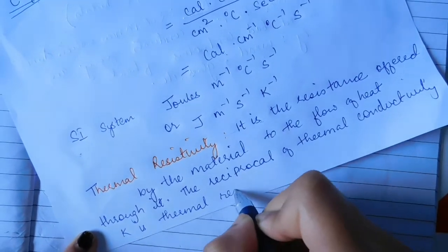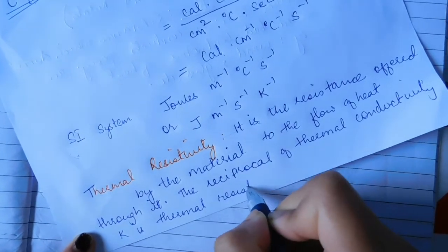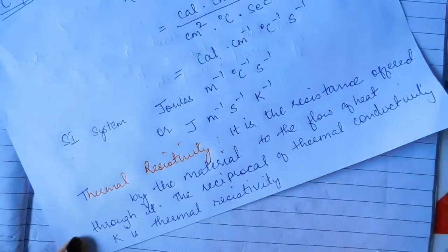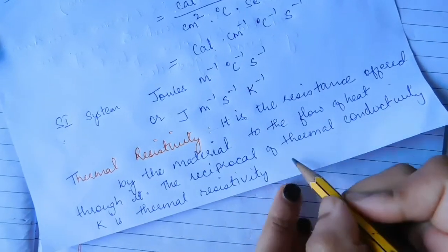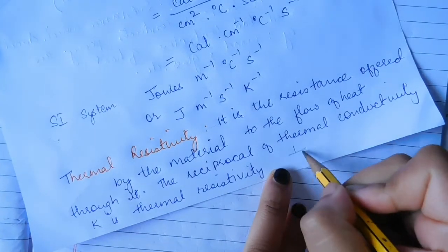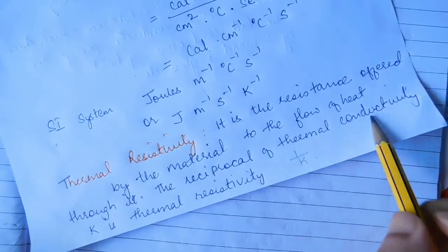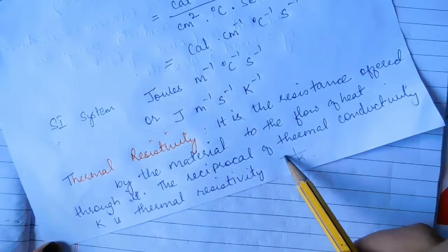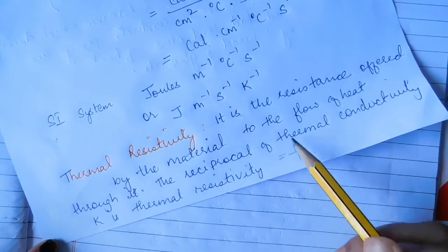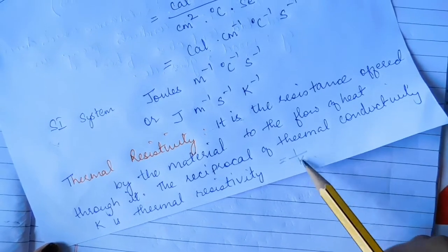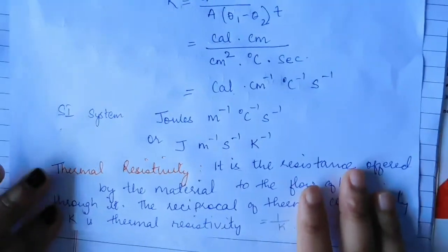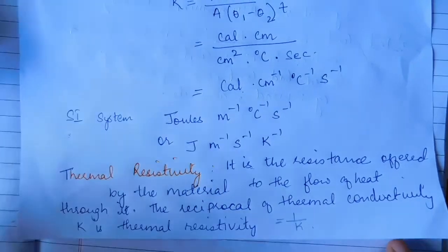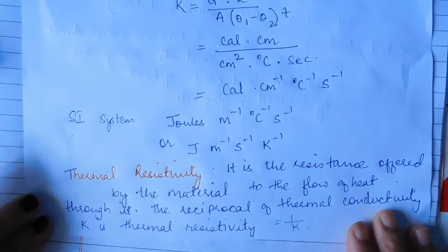Thermal resistivity is the reciprocal of thermal conductivity. If K is the thermal conductivity, then thermal resistivity equals 1 divided by K. With that, we complete the chapter. Thank you.